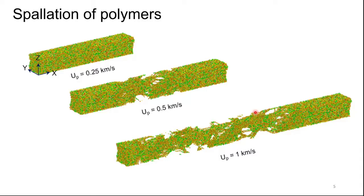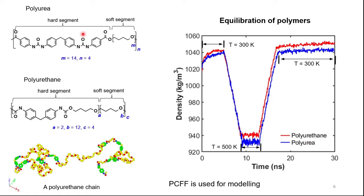In this talk, I am going to focus on the spallation of polymers. We were interested in two polymers: polyurea and polyurethane. The two structures are shown here, and this is a typical polyurethane chain we used for the study.